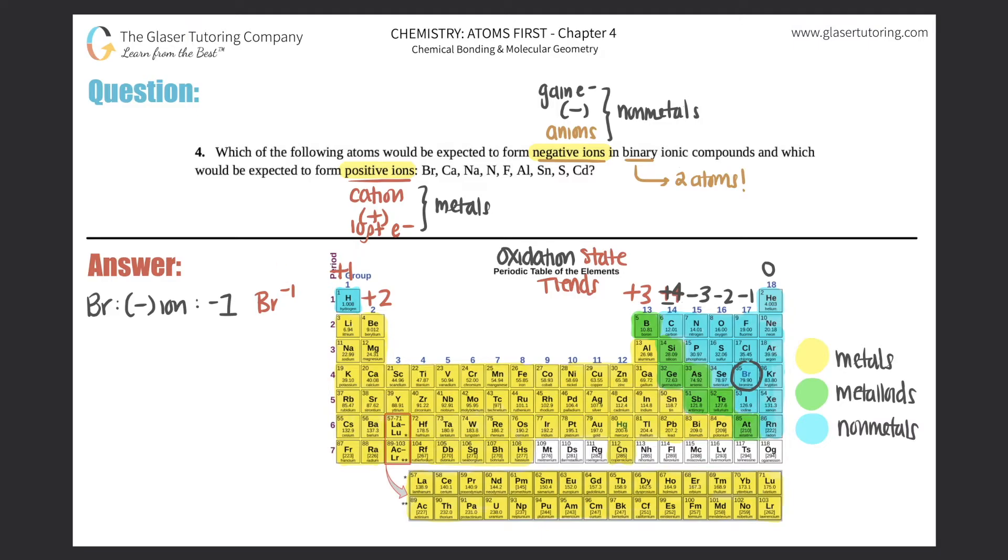Next is calcium, Ca. Calcium is over here in group two so it's a plus two. This one would be a positive ion, more specifically a plus two. If you wanted to write it for practice, you would always put it in the top right corner, so it'd be like that.